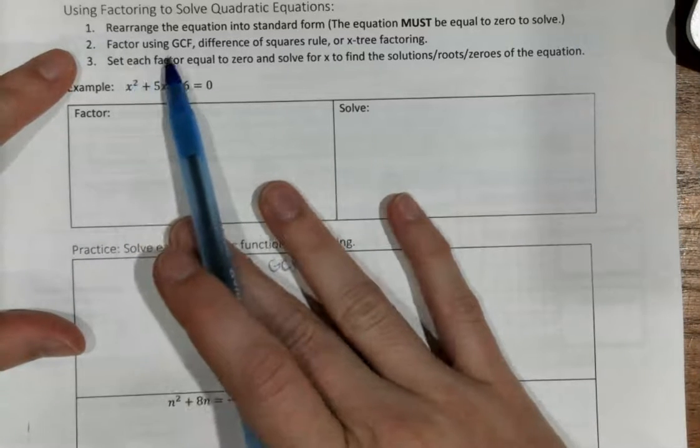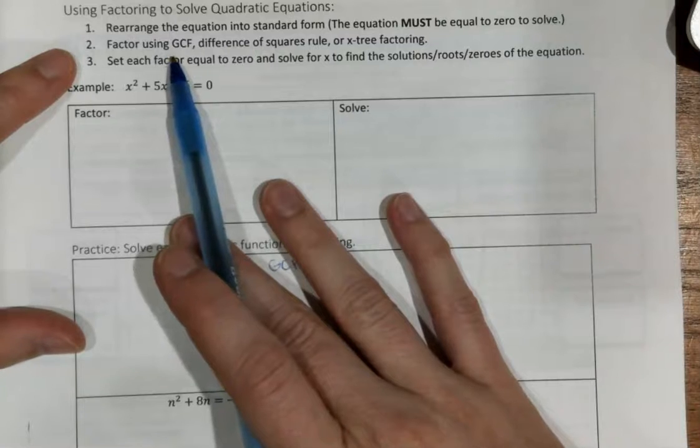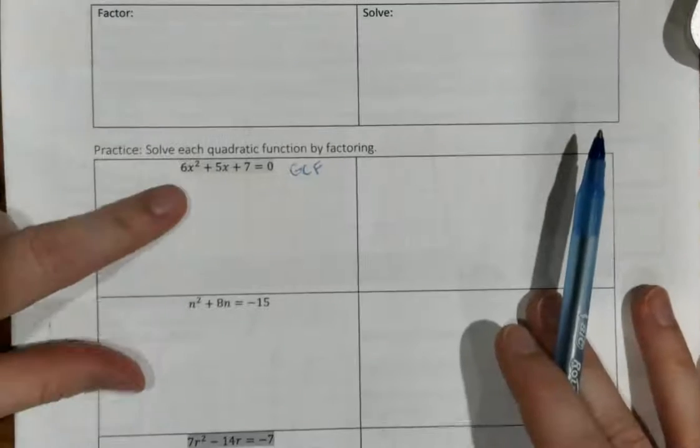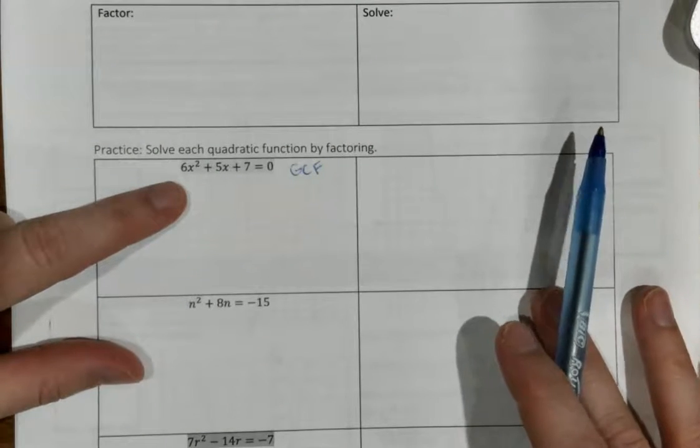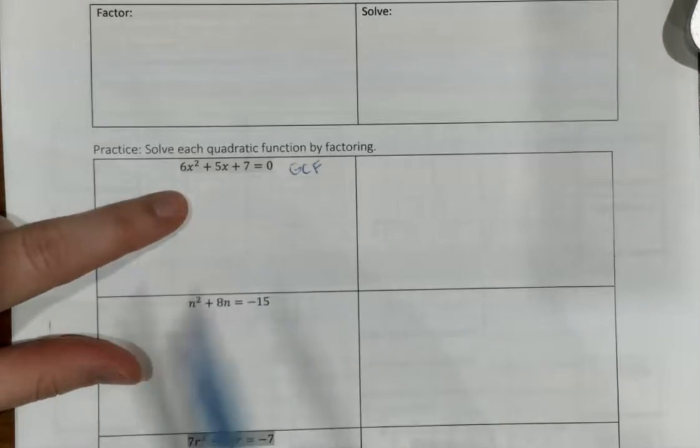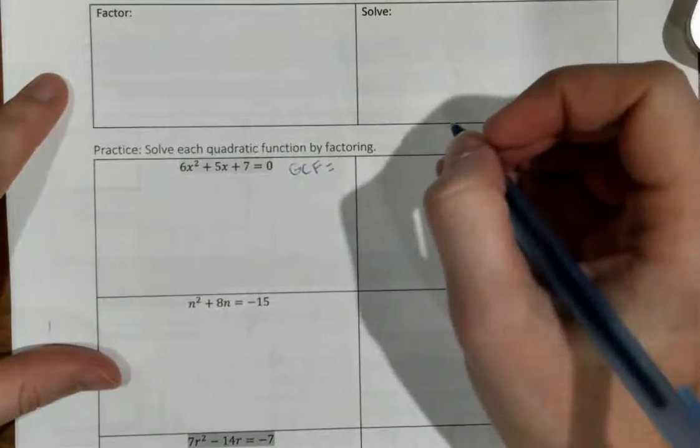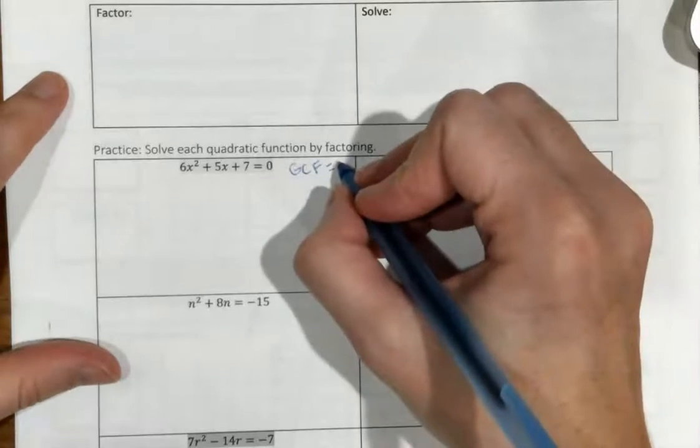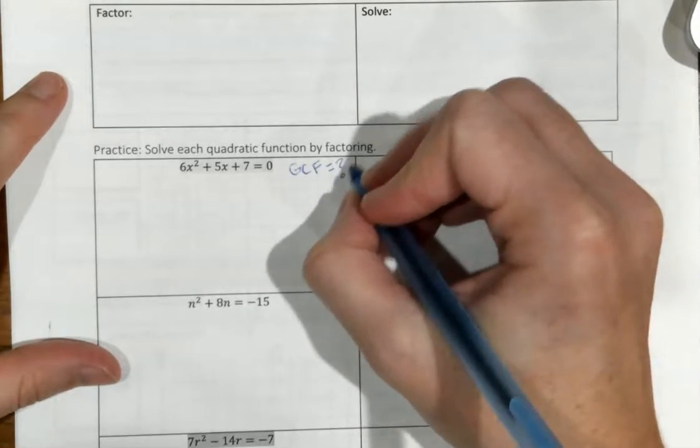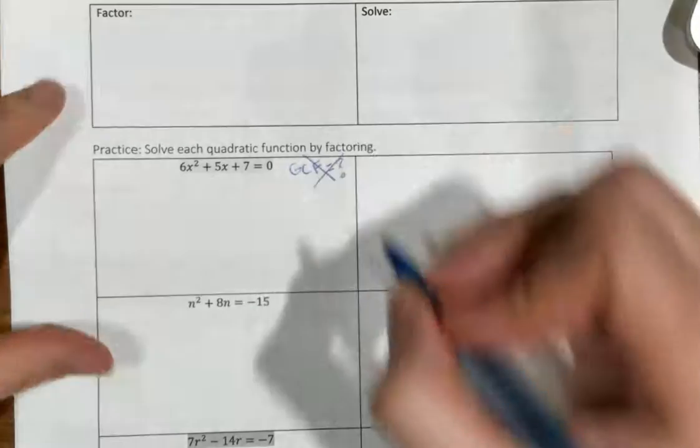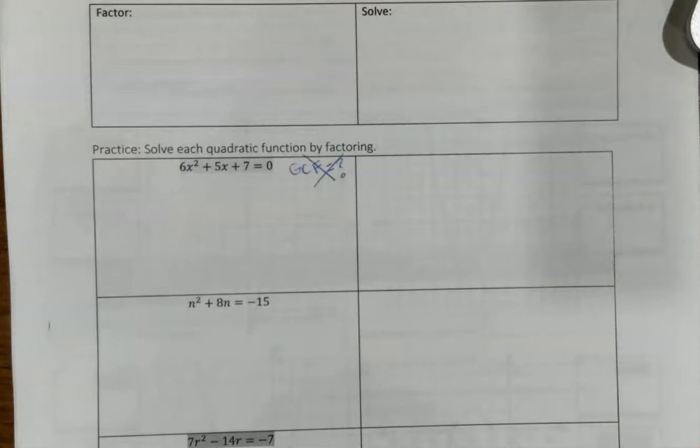Step number two, factor out a GCF. Does it have a GCF? What's the largest number that can go into 6, 5, and 7? There is no GCF. There's not a number that can go into 6, 5, and 7. Since there's no GCF, that means we need to do our x-factoring with our MDRK.